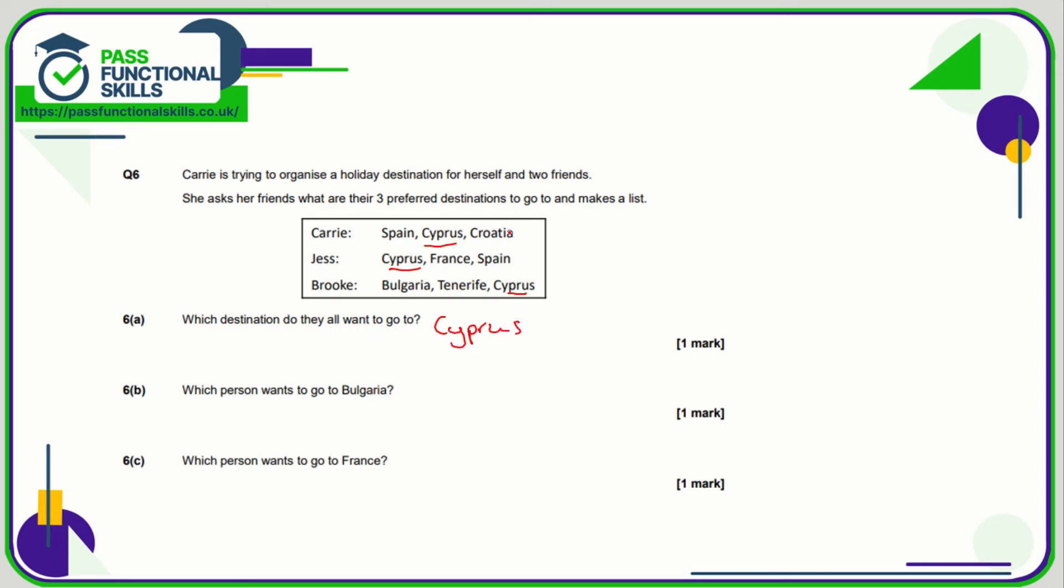Which person wants to go to Bulgaria? Well, here's the word Bulgaria, and it's next to the name of Brooke. So she obviously fancies a trip to Bulgaria. Who wants to go to France? Well, France is on the jest list. Fairly easy, that question. And that's it.